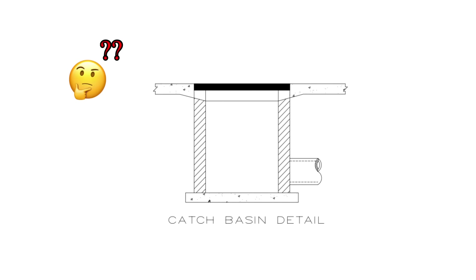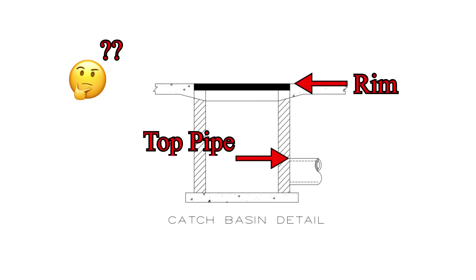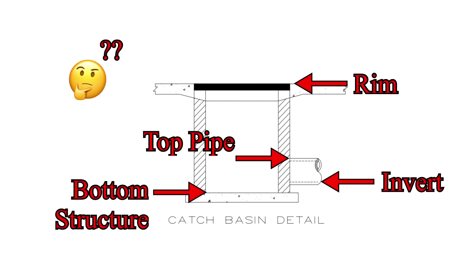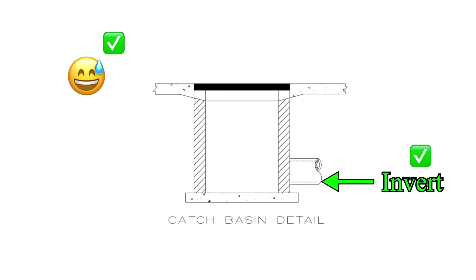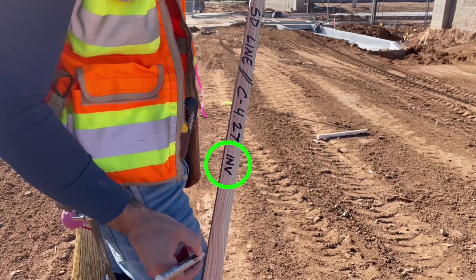Which part of the storm drain line? We must always communicate to which surface or component we are providing a cut or fill. In this case, we've specified INV for the invert — that's the internal flow line of the storm drain pipe. This step is one of the most important and can easily cause errors in construction when ignored.